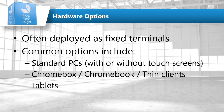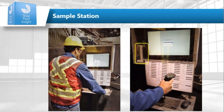Thin clients, VMs, Chromeboxes, tablets — all of that works. You can even use old Windows 7 or Windows 10 PCs or laptops you're no longer using. Here's an example of a terminal that had been out on the floor for over 10 years — a thin client running a VM with a laminated sheet for scanning codes like fixed assets, maintenance, or break codes. Of course they're also scanning production orders.